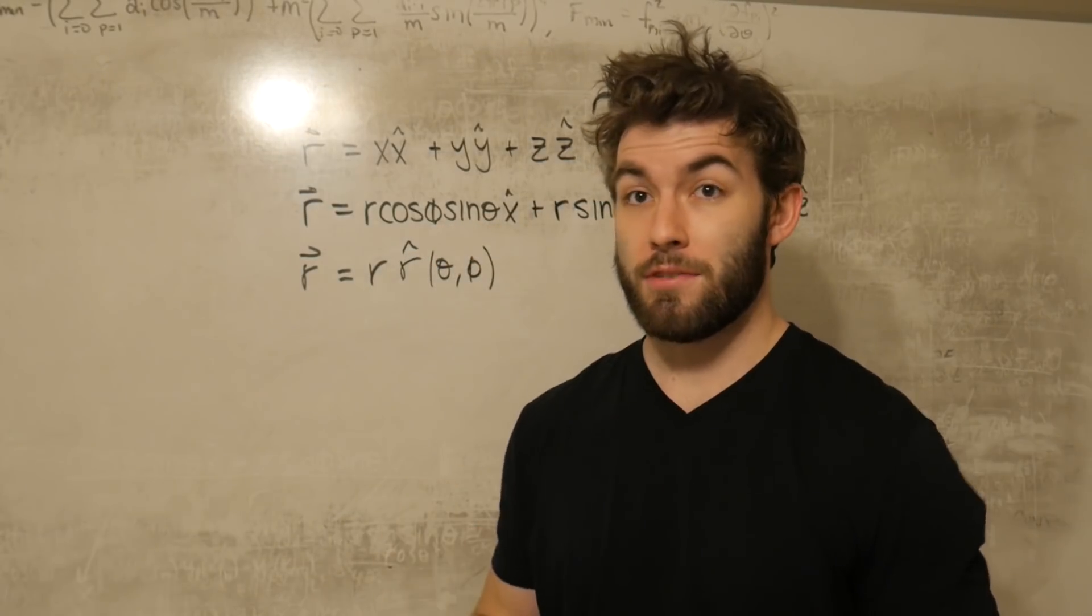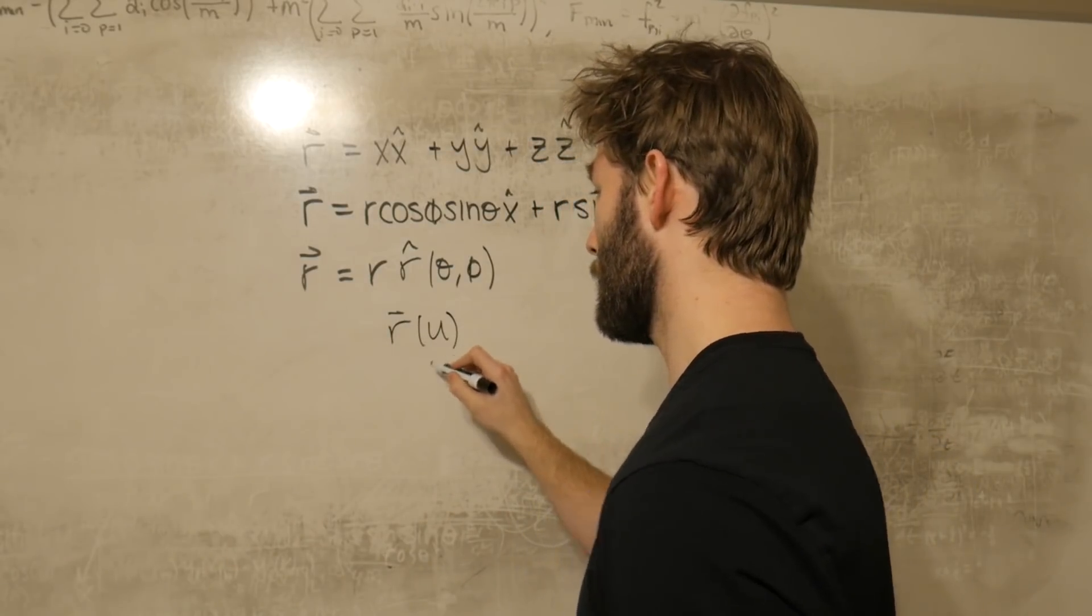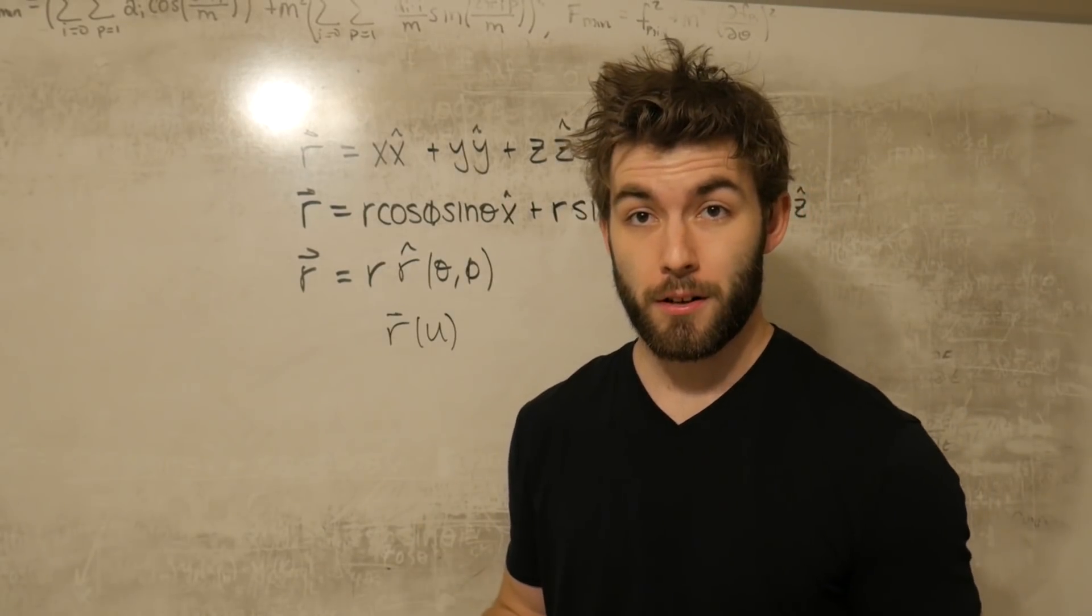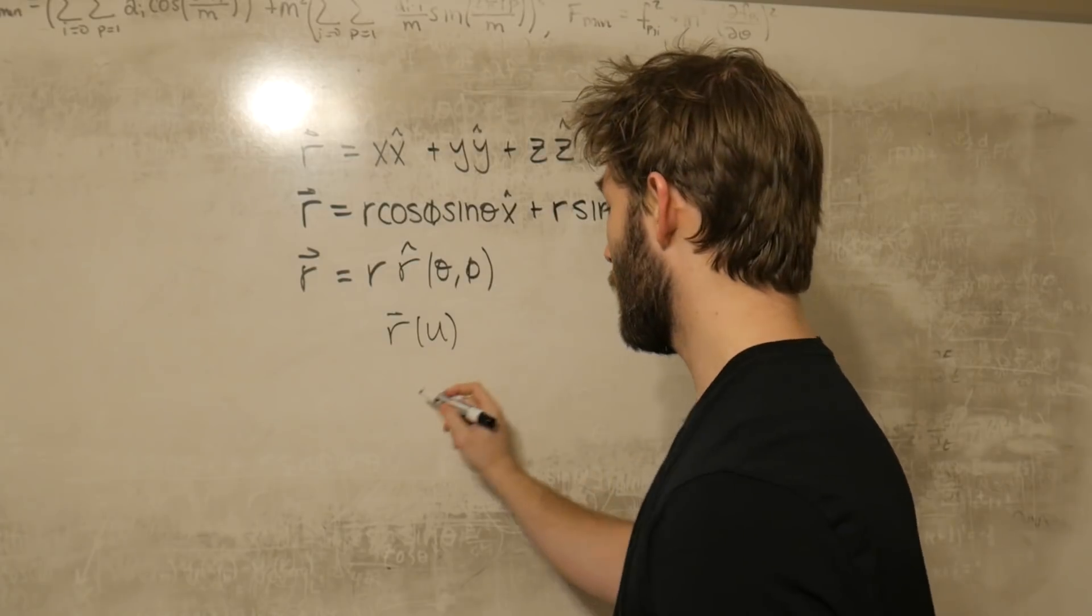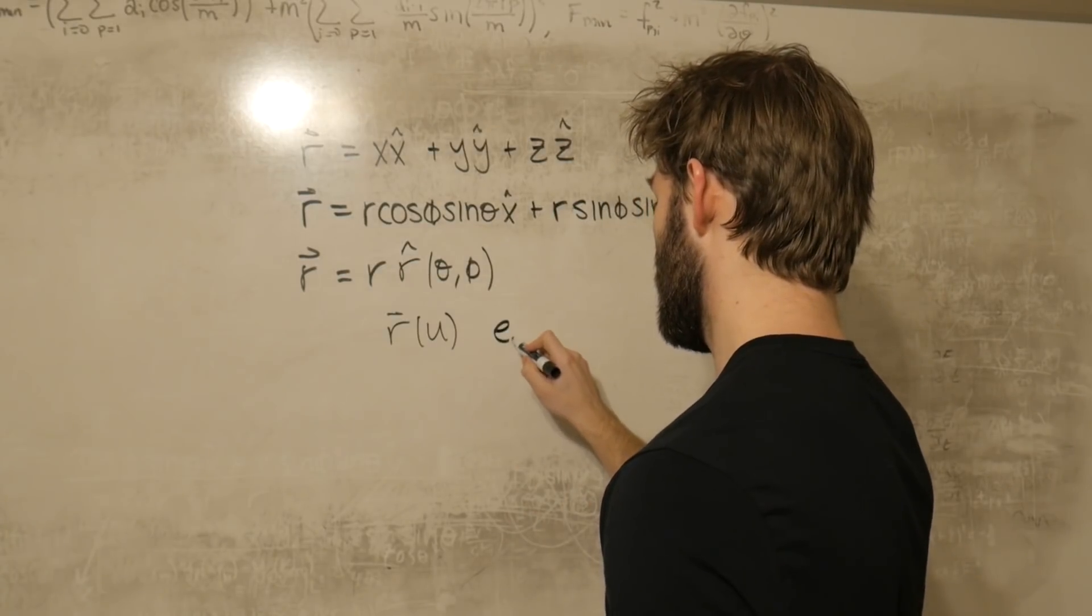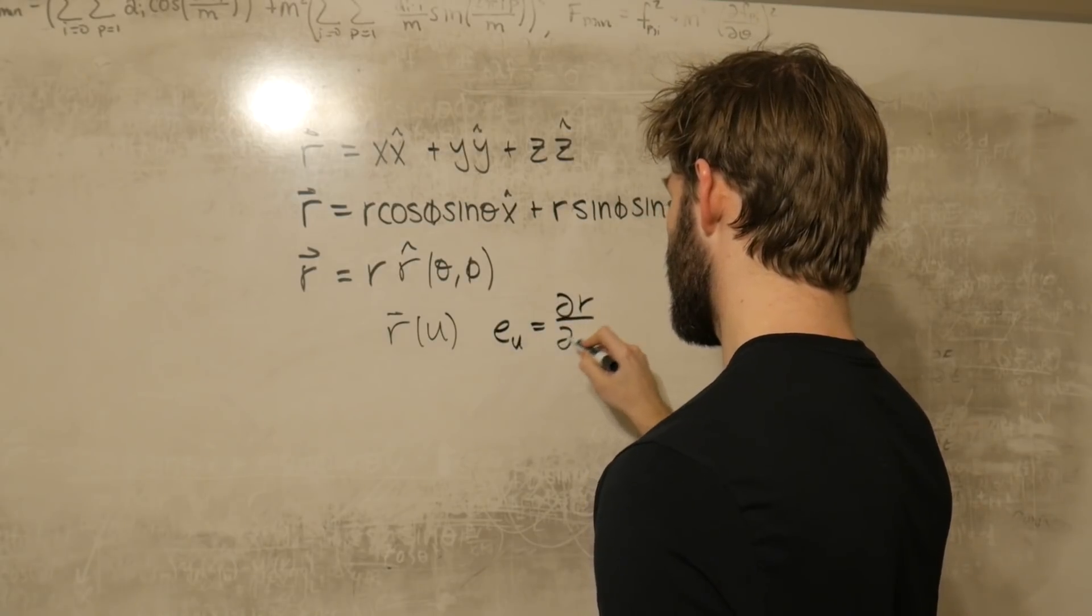Now let's say that we have some arbitrary vector r that depends on some parameter u. We can create a new vector that points in the direction that u is increasing by the following way. We can define some new basis vector equal to the change in r with respect to u.